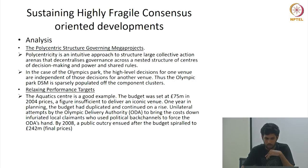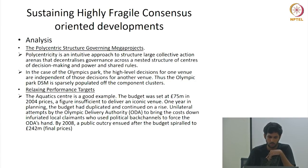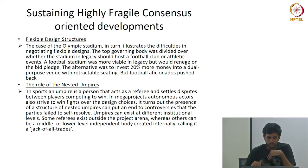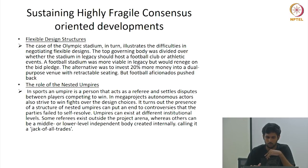Regarding relaxing performance targets: the Aquatic Centre is a good example. The budget was set at £70 million in 2004 prices — a figure insufficient to deliver an iconic venue. One year into planning the budget had to be revised, and by 2008 it came to £242 million. On the London Olympic Stadium, there was debate on whether to build for football or athletics. The football stadium was seen as a more viable legacy, but there was an alternative to invest 20 percent more and have a dual-purpose ground — however, football enthusiasts pushed back and a football stadium was built.